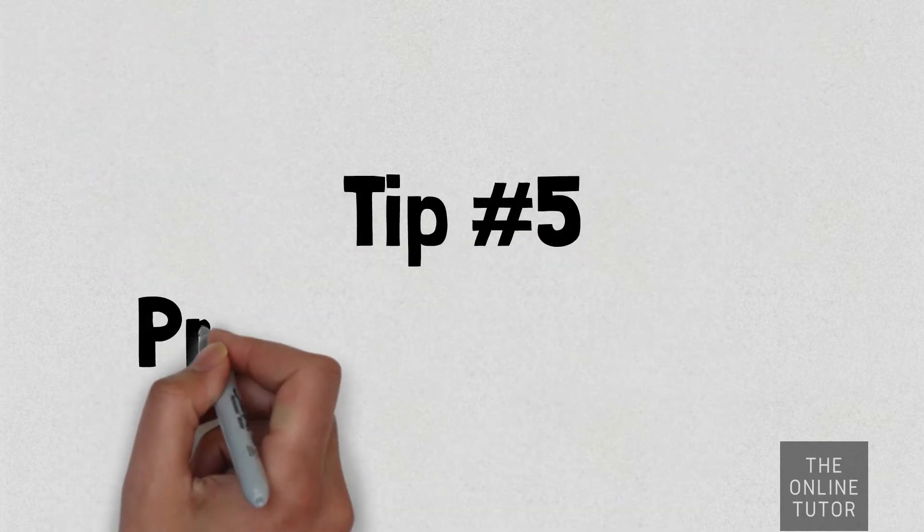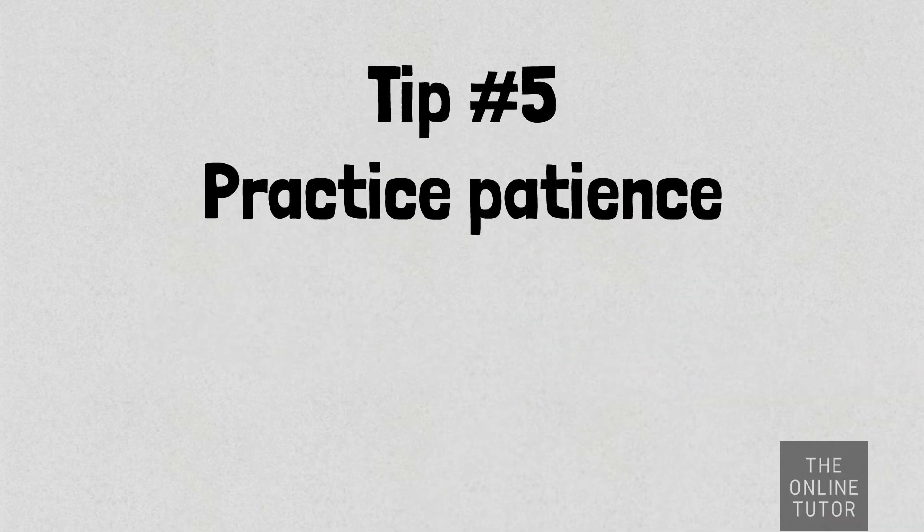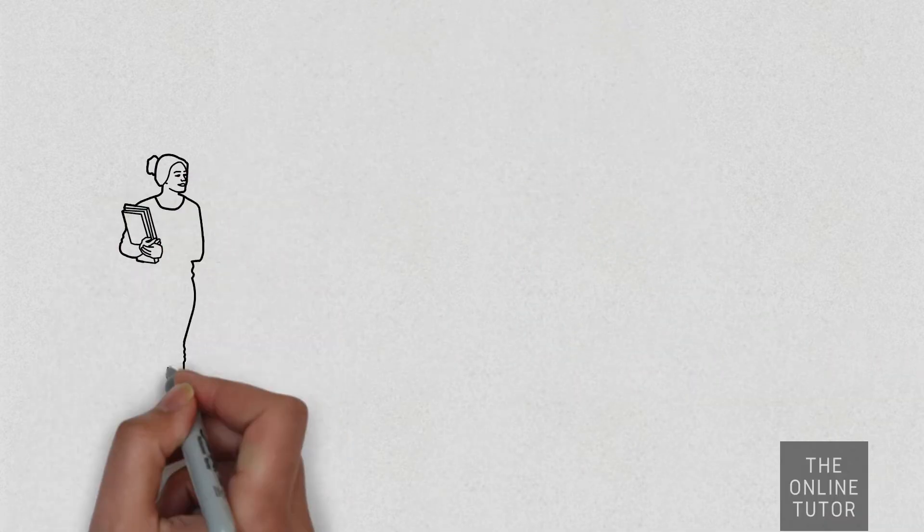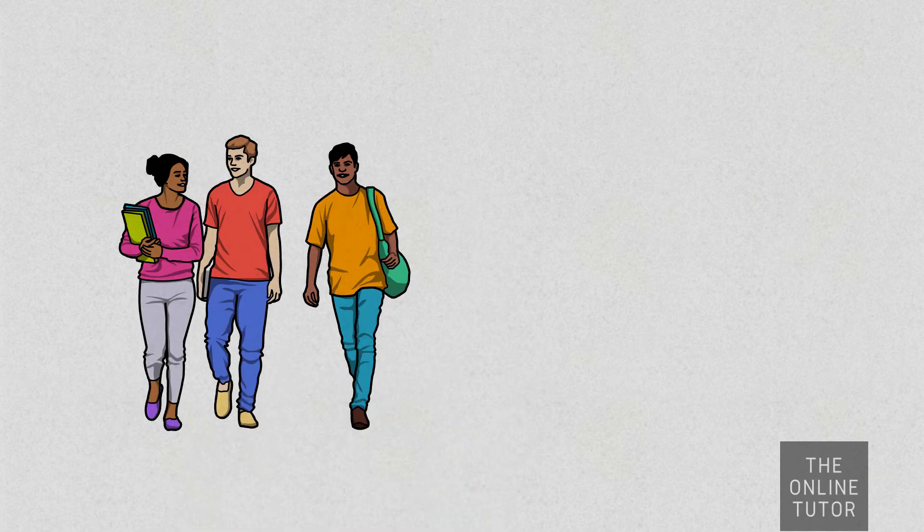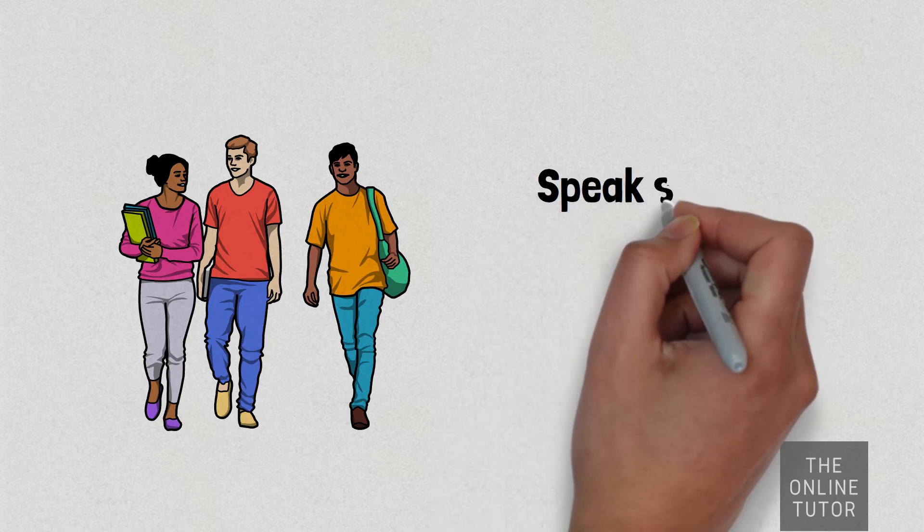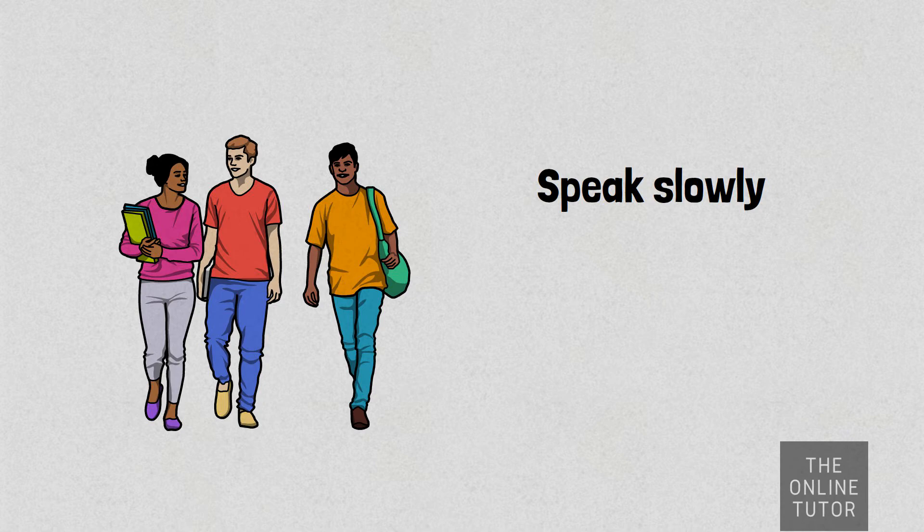Tip number five: practice patience. Patience is key. Remember, it is not easy to feel misunderstood and note that the locals also feel helpless because of the language barrier. Speak slowly and use the words or phrases that you learned to communicate your requests. Try numerous times until they understand you.